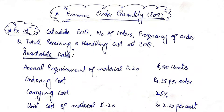The available data given for this situation: annual requirement of material D20 is 6000 units — the full year requires 6000 units of material D20. Ordering cost is ₹15 per order — placing one order costs ₹15. Carrying cost is 25%. Per unit cost of material D20 is ₹2 per unit. This is the available data from which we need to solve the four requirements.